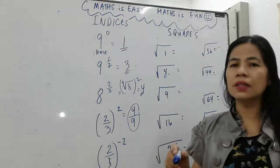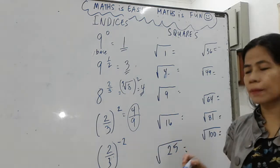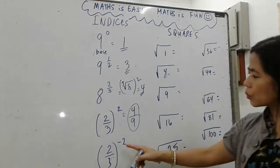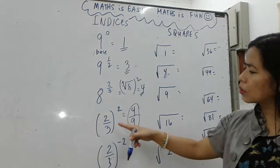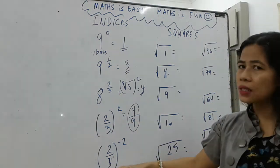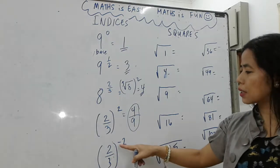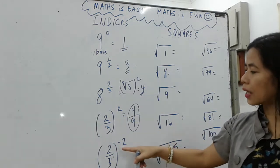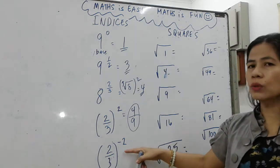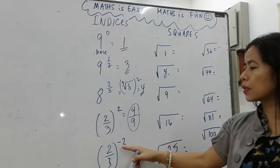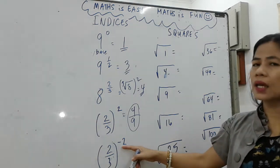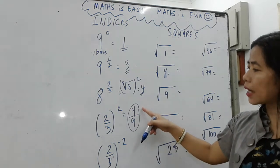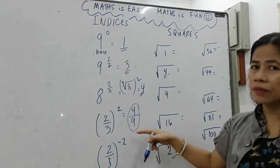Now, how about if the exponent is negative? Take negative two over three — same numbers but negative. What we're going to do is express it in a positive way: since it is negative, instead of four over nine,